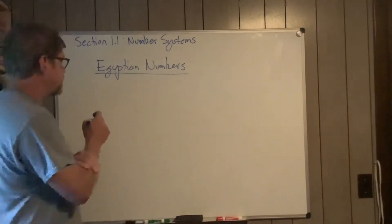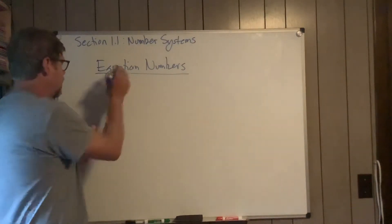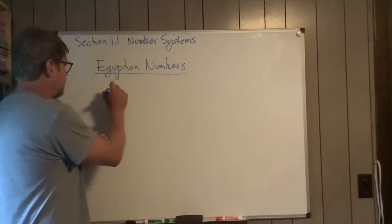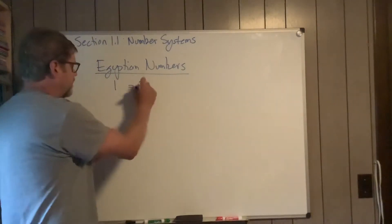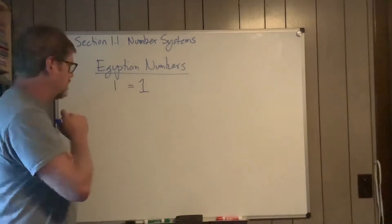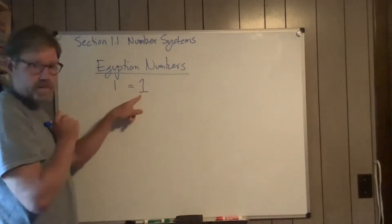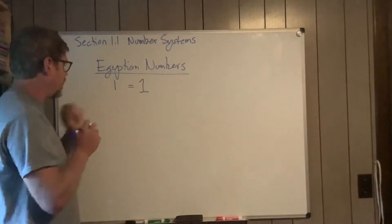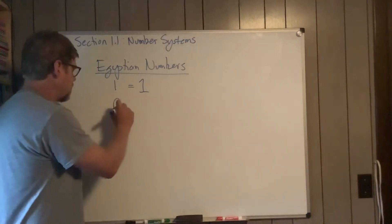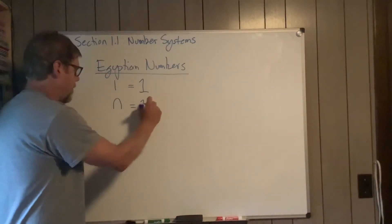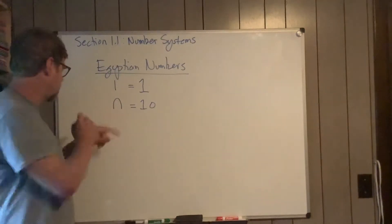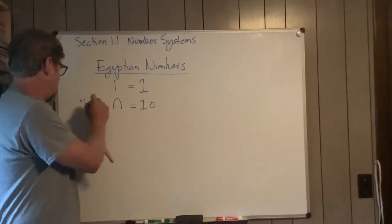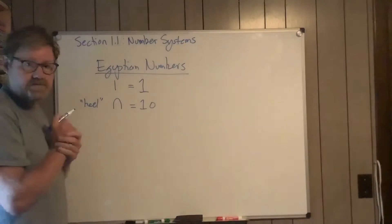Okay, so Egyptian numbers. It's fairly straightforward. They use a vertical line to represent the number one. I'm going to accentuate the serifs on the one. This little upside-down U is often called a heel and represents the number 10.